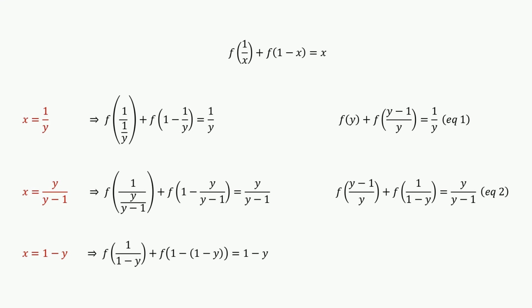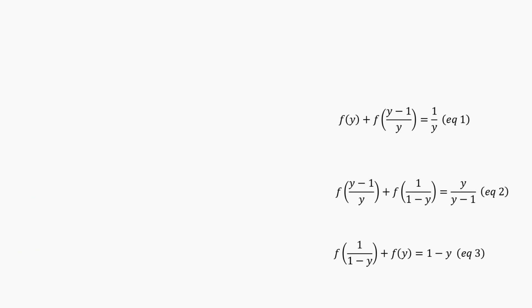Simplifying this, we have the third equation: f of 1 over (1 minus y) plus f of y equals 1 minus y. Looking at the three equations, we can find that equation 1 minus equation 2 plus equation 3 will give 2 f of y.